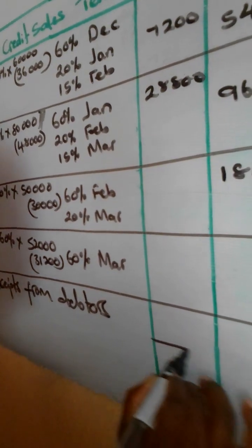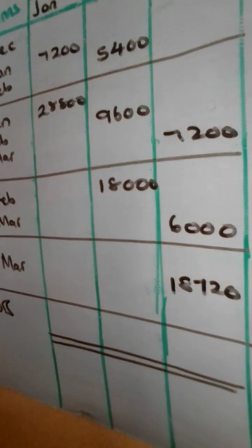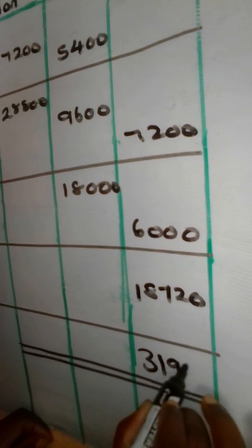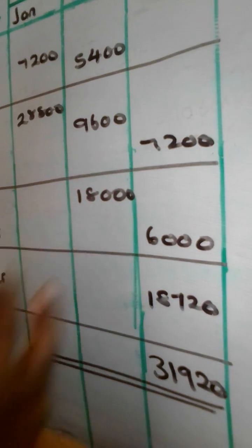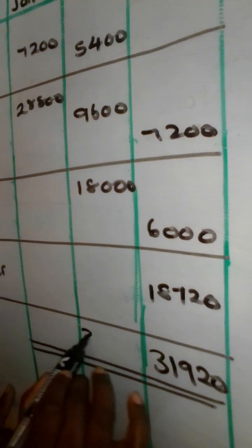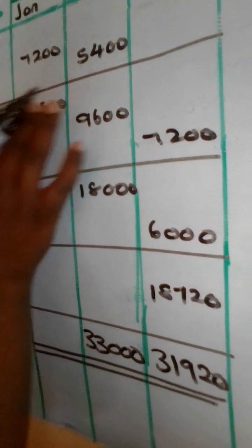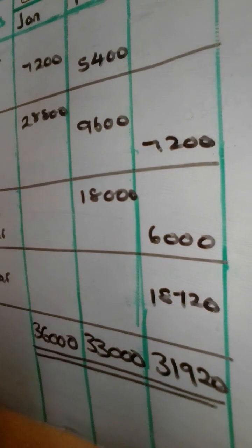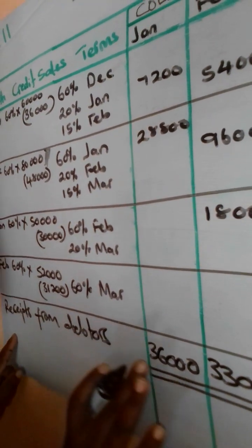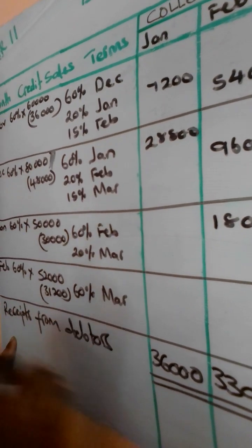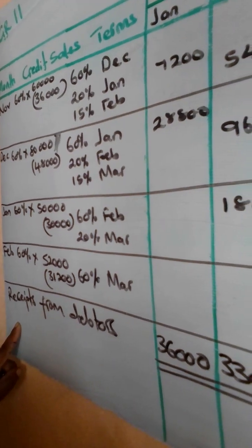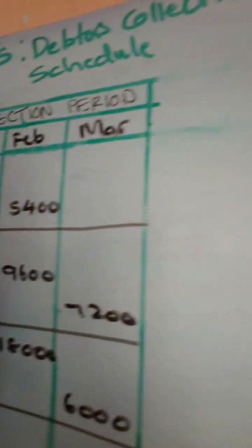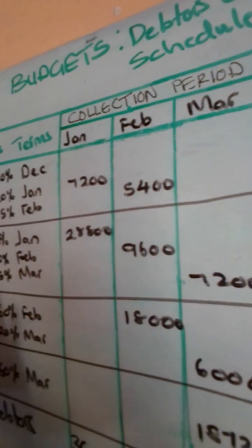Now we calculate the receipts from debtors — the column totals for each month in our budget period. January: 7,200 + 28,800 = 36,000. February: 5,400 + 9,600 + 18,000 = 33,000. March: 7,200 + 6,000 + 18,720 = 31,920. These totals are the amounts we record in the cash budget as receipts from debtors — money we expect to receive from debtors during the period January to March.